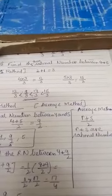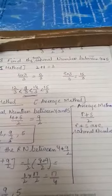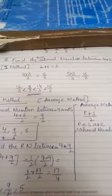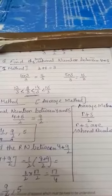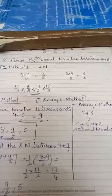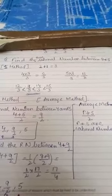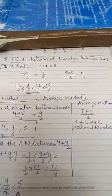4 into 3 by 3, 12 by 3. 5 into 3 by 3, that is 15 by 3. So, we can write numbers as 12 by 3, 13 by 3, 14 by 3 and 15 by 3. So, two numbers between this is 13 by 3 and 14 by 3.